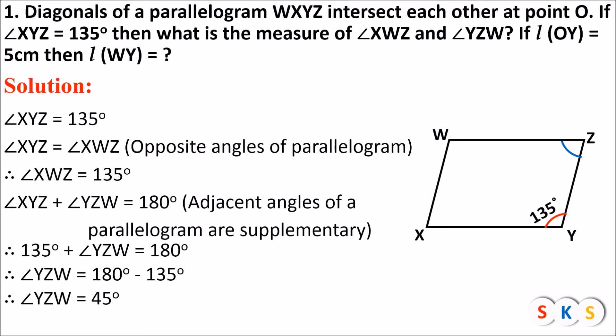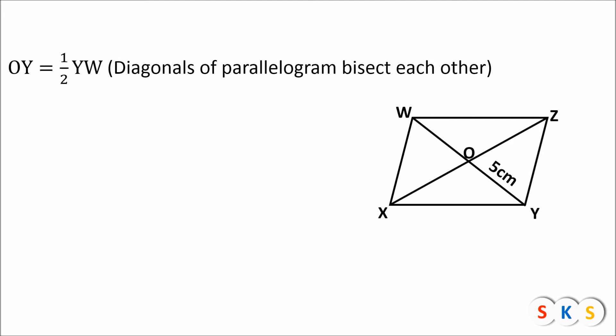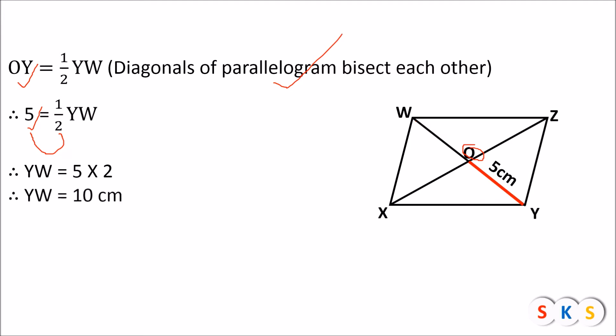Now we will find the length of WY. Here, OY is half of WY. You can see in the figure segment OY is half of diagonal WY. Because diagonals of a parallelogram bisect each other — that means point O divides segment WY into two equal parts. Therefore, OY will be half of WY. OY is given as 5 centimeters, so we get 5 equals WY divided by 2, which means WY equals 5 times 2.